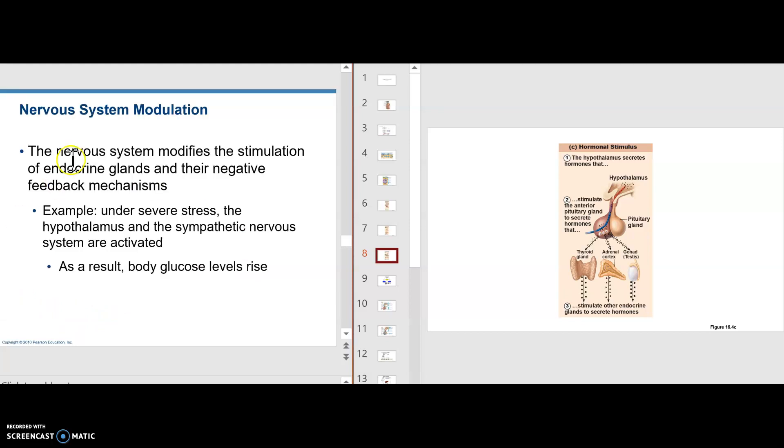The nervous system modifies the stimulation of endocrine glands through negative feedback. Under severe stress, the hypothalamus and sympathetic system are activated. As a result, blood glucose levels rise. Because the sympathetic nervous system can turn on epinephrine, and epinephrine can increase the blood sugar.